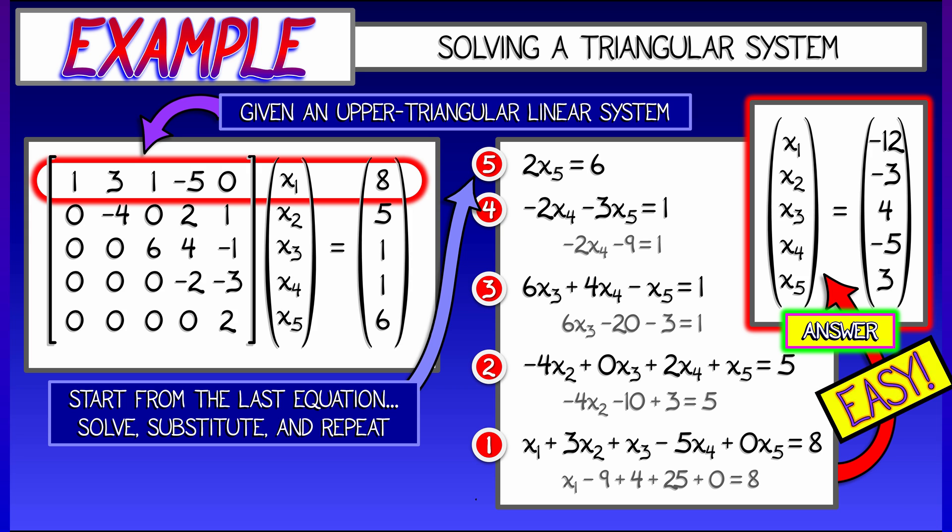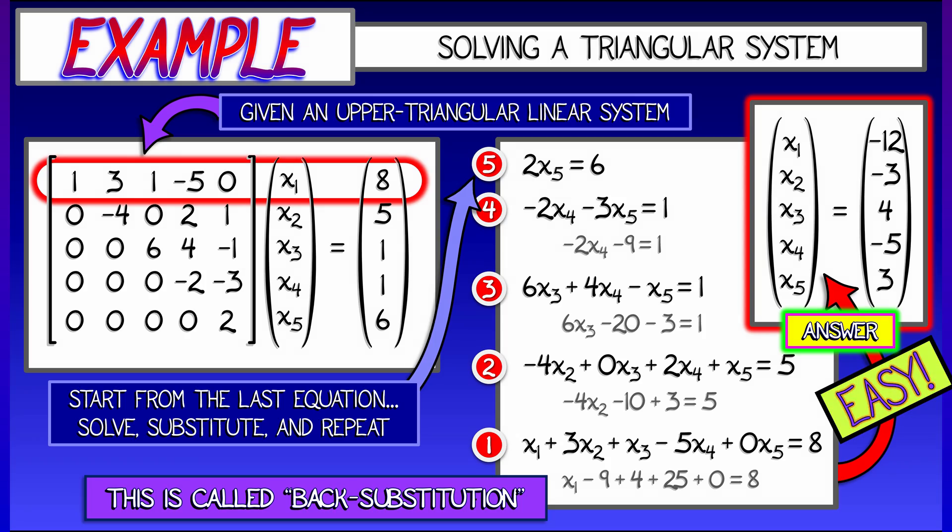There was nothing difficult about this at all. It's all because we had a triangular matrix. This method is called back substitution. It's incredibly important. And it's going to be the foundation for how we solve all linear systems.